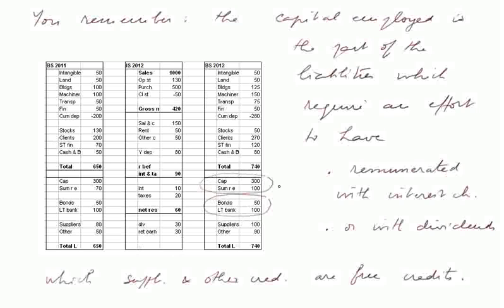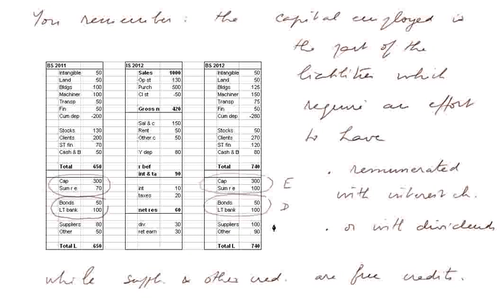And we have equity and debt at the beginning of the year and at the end of the year. Whereas the suppliers and other creditors are free credit. Here we don't have to make any effort to get that. It comes from the operations of the firm.